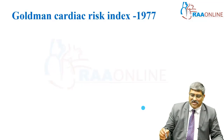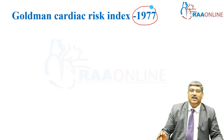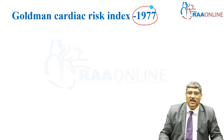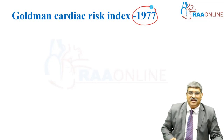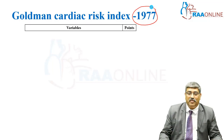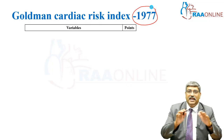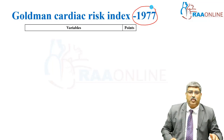The first risk scoring system was done in 1977 by Goldman. It is called the Goldman Cardiac Risk Index. There are about nine variables and each variable has a specific point.